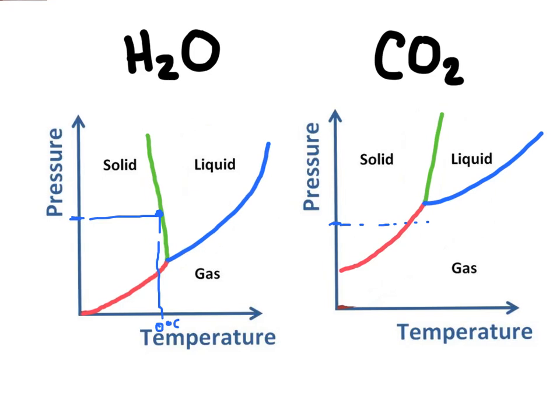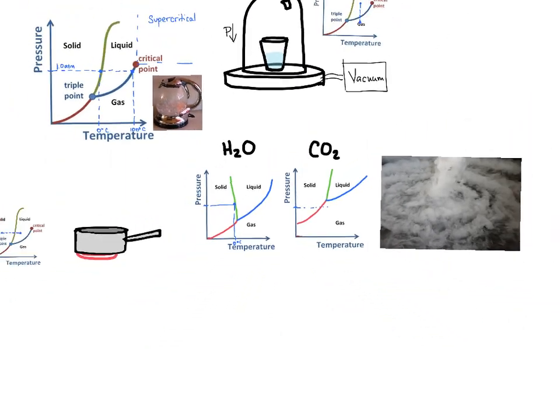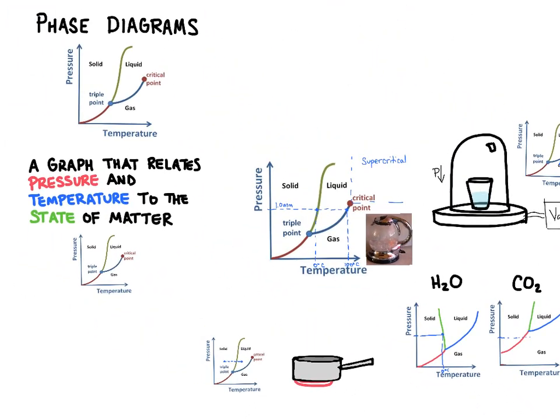So every substance has a different looking phase diagram, and you can change the state of a substance by changing the temperature or changing the pressure. And so those are phase diagrams.